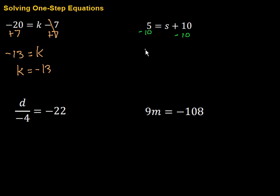Then 5 minus 10 gives us negative 5, equals, and what's left here? Well, there's an s like so. Then again, I'll flip it around. And we have s equals negative 5.